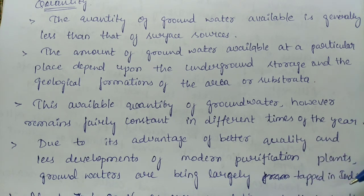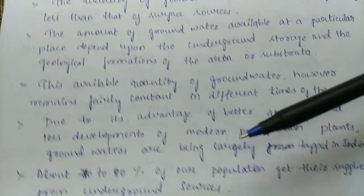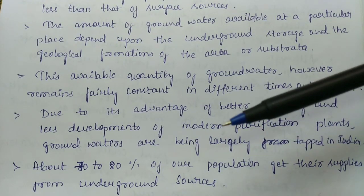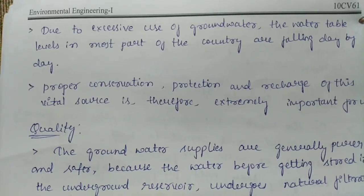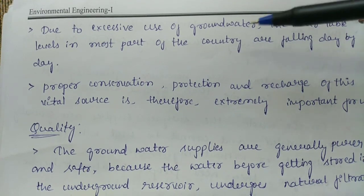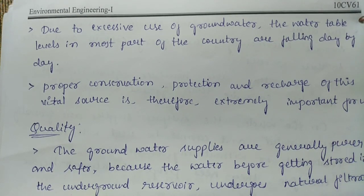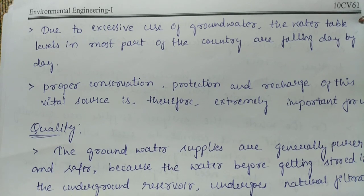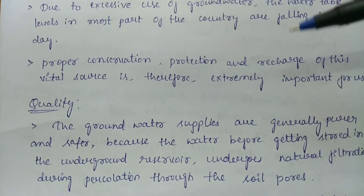Even though in appearance the turbidity will be less and physical pollution is less, groundwater will generally have a high amount of salts. About 70 to 80 percent of our population gets their supplies from groundwater sources. However, due to excessive use of groundwater, the water table levels in most parts of the country are falling day by day, since continuous exploitation of this water leads to exhaustion of the water table.